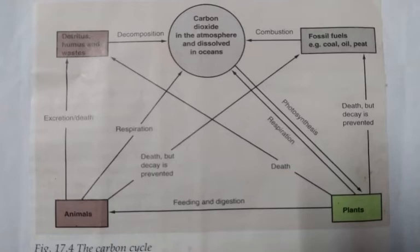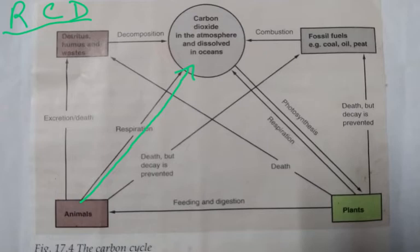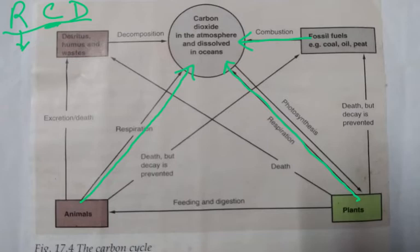Now as you look at the carbon cycle, it is basically very interesting. There are three things which return CO2 to the atmosphere, and that is R, C, D. R is for respiration — animals respire and return carbon dioxide to the atmosphere and dissolved in the oceans; plants also respire and return it to the atmosphere. Then C is combustion, which also returns CO2 to the atmosphere.